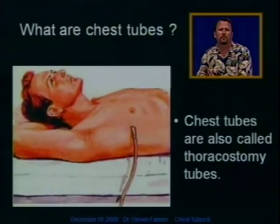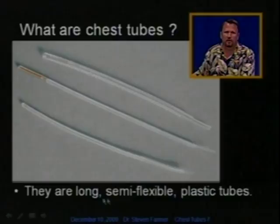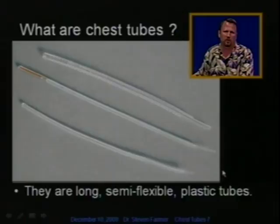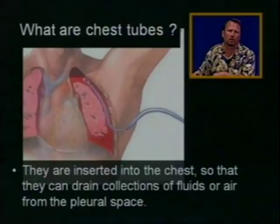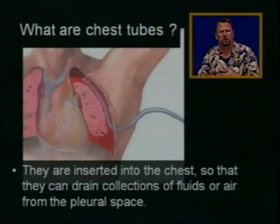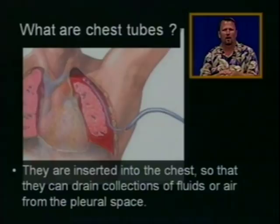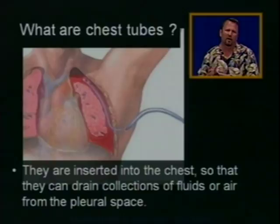So what are chest tubes? Chest tubes are also called thoracostomy tubes. They are long, semi-flexible plastic tubes that come in all sorts of shapes and sizes. Chest tubes are inserted into the chest wall so that they can drain collections of fluid or air from the pleural space. Your lungs are surrounded by a pleural space, and there's really nothing in that pleural space other than just a little bit of fluid. Those two pleural linings give the lungs lubrication to move against the chest wall.